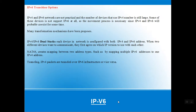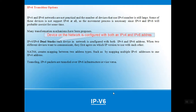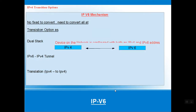As we know, many transformation mechanisms have been developed for IPv6 transition options. Still, a large number of devices use IPv4, and some of these devices do not support IPv6. So the movement process covers the necessity of going from IPv4 to IPv6. We have dual stacks — a network configured with both IPv4 and IPv6 addresses — and NAT64 for creating a mapping between the two address types.